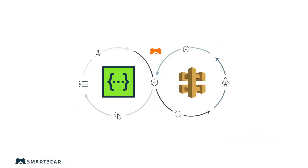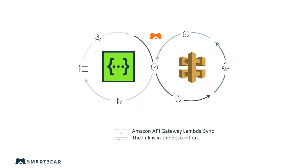In this video, you will learn how to set up the Amazon API Gateway integration and publish your SwaggerHub definitions directly to the gateway in proxy mode. If you want to use Lambda functions as the backend for your API, watch our video about the Lambda Sync integration. The link to it is in the video description.